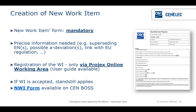Once the decision is taken — after two months by correspondence — if the new work item is approved, the TC secretary takes the information from the new work item form, goes to projects online working area, and registers the information there. The decision or information will appear on projects online — it is not immediate; it takes one day for the information to be available. CCMC does not have to register the work item in the database; it is the TC secretary who registers the new work item on projects online working area.